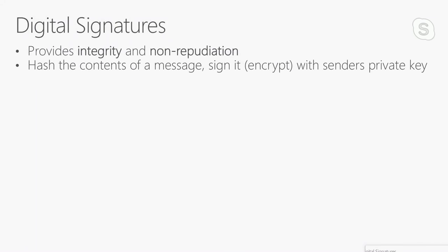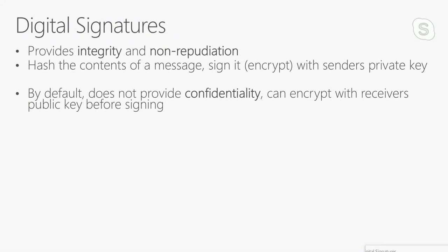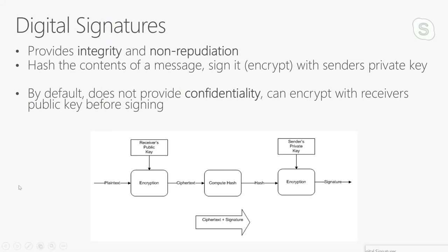We'll talk quickly about digital signatures — this provides both integrity and non-repudiation. The idea is I'm going to hash the contents of a message, then sign that hash with my private key. By default it doesn't provide confidentiality, but I'll show you how to add that. I've got some plain text, I encrypt it using asymmetric with the receiver's public key to get ciphertext. I use hashing to compute a hash, then sign it with my private key — that becomes my signature. When I send the ciphertext, the receiver uses their private key to decrypt it and can use my public key to prove that I signed it. So we've got non-repudiation, integrity, and confidentiality all in one approach.